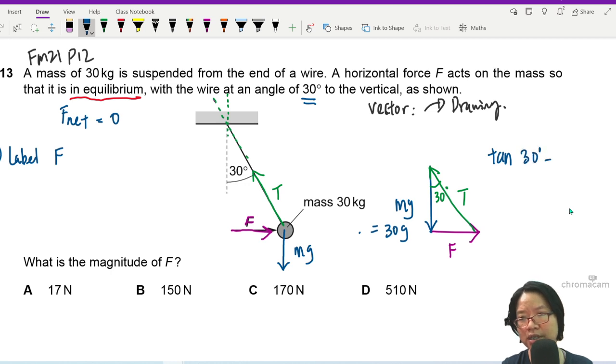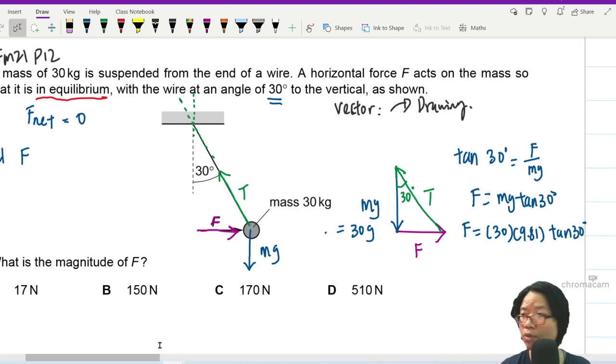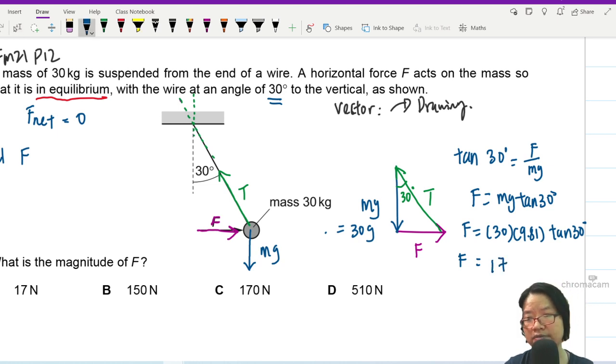So I can use tangent. Tangent 30 is opposite over adjacent. F over mg. So from here, F is equal to mg tangent 30. We can substitute beautiful values. 30 times 9.81 tangent 30. There we go. So we press our friend Casio, the calculator. And this should arrive at 170 newton.